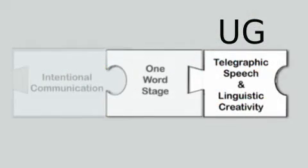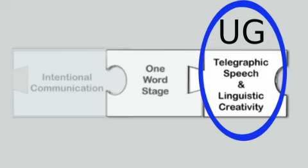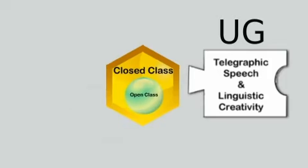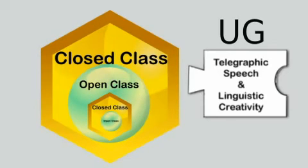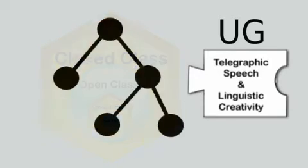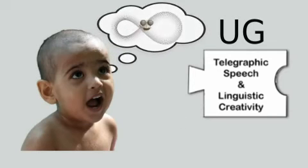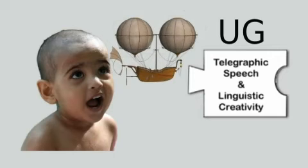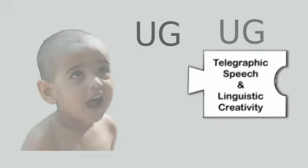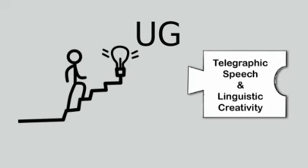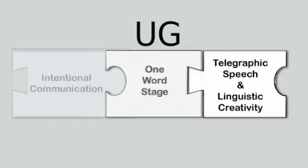Finally, UG has within it an explanation of linguistic creativity. The process of merging open and closed classes repeats upon itself, creating longer and more complex structures that can be used to express an infinite number of novel ideas. The theory of UG has propelled us forward in our quest to explain language development, but it does not account for all of our puzzle pieces.